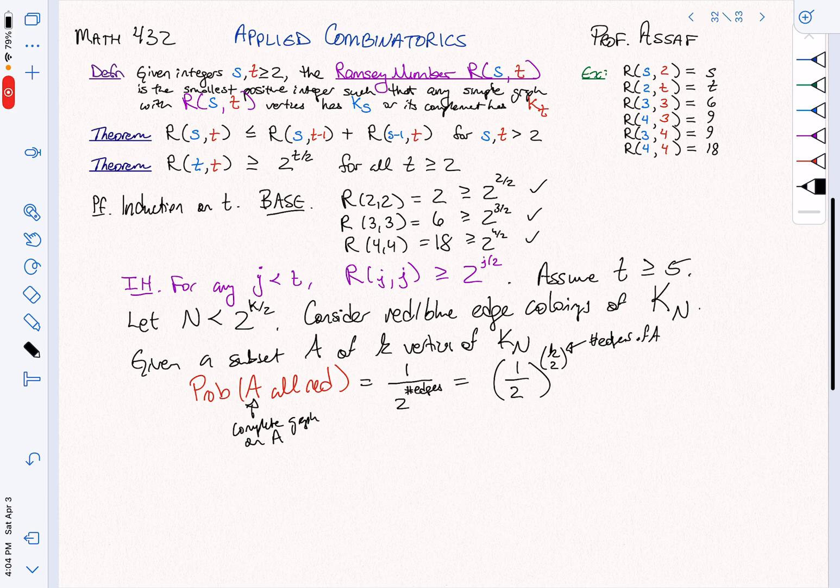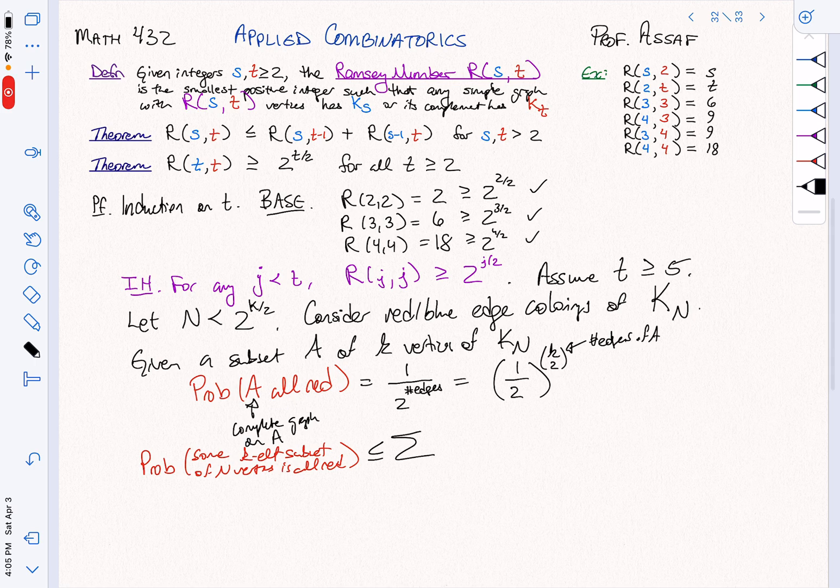Now let's think about this. What's the probability? We want to get now, we're going to extend this. So what is the probability that some K element subset of the N vertices is all red?